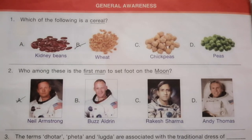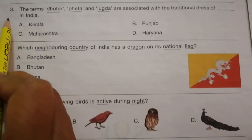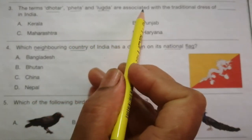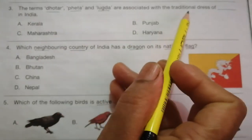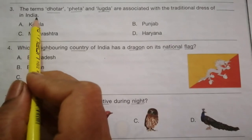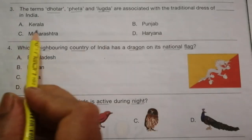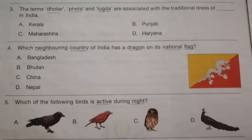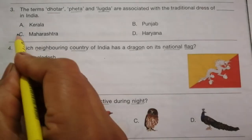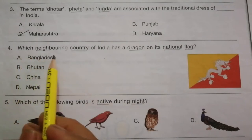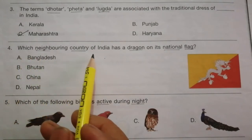Question 3: The terms dotar, feeta, and lubda are associated with the traditional dress of which state in India? The options are Kerala, Punjab, Maharashtra, and Haryana. The answer is C, Maharashtra.